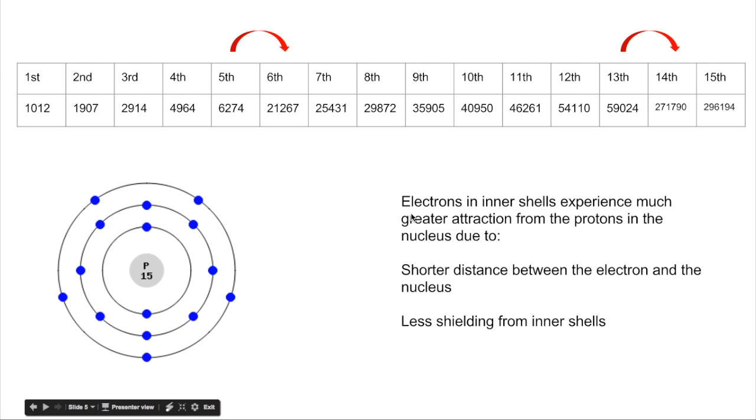So electrons in inner shells experience much greater attraction from the protons in the nucleus due to a shorter distance between the electron and the nucleus. So this electron here is much closer to the nucleus than these.